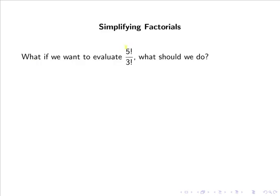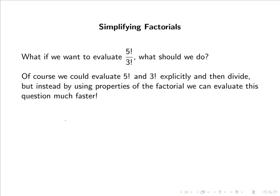So now, what if we wanted to evaluate 5 factorial divided by 3 factorial? Of course we could evaluate 5 factorial and 3 factorial explicitly and then divide, but by using properties of the factorial we can evaluate this much faster. So 5 factorial divided by 3 factorial is simply 5 multiplied by 4 multiplied by 3 multiplied by 2 multiplied by 1, all divided by 3 multiplied by 2 multiplied by 1.